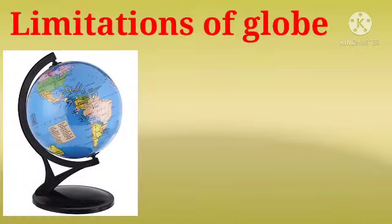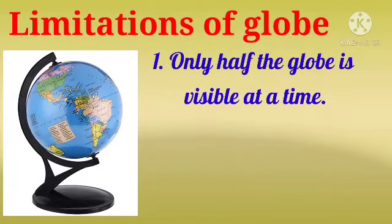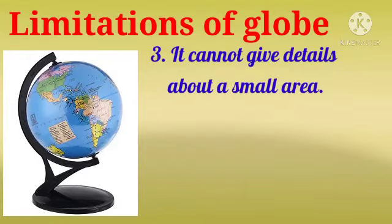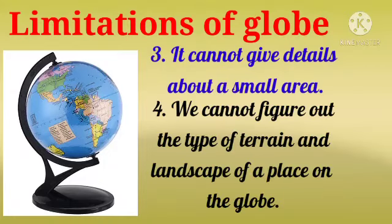However, it has certain limitations. First, only half the globe is visible at a time. Second, it cannot give a correct idea of the distances between two places. Third, it cannot give details about a small area. Fourth, we cannot figure out the type of terrain and landscape of a place on the globe.